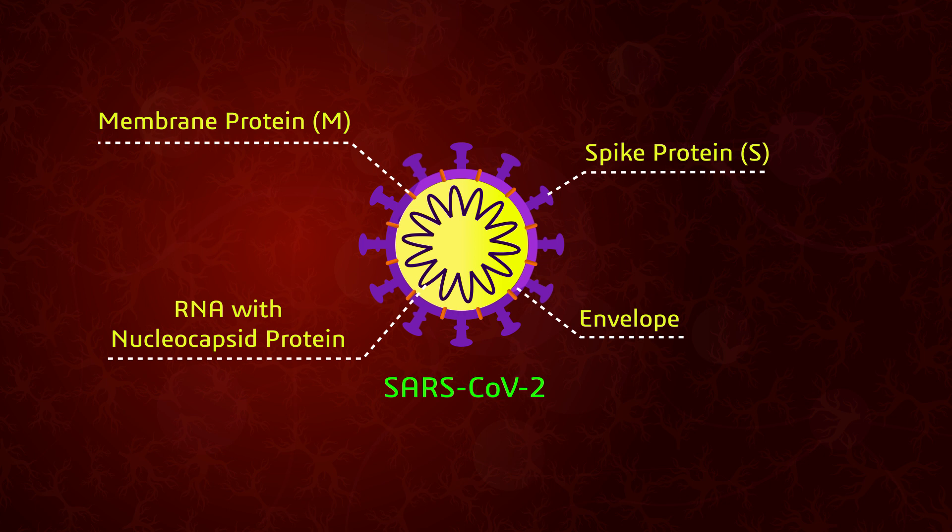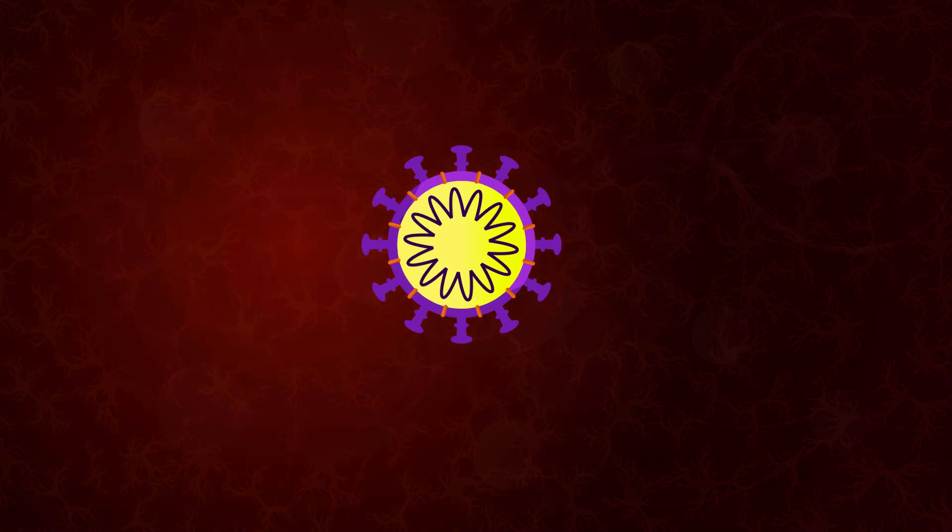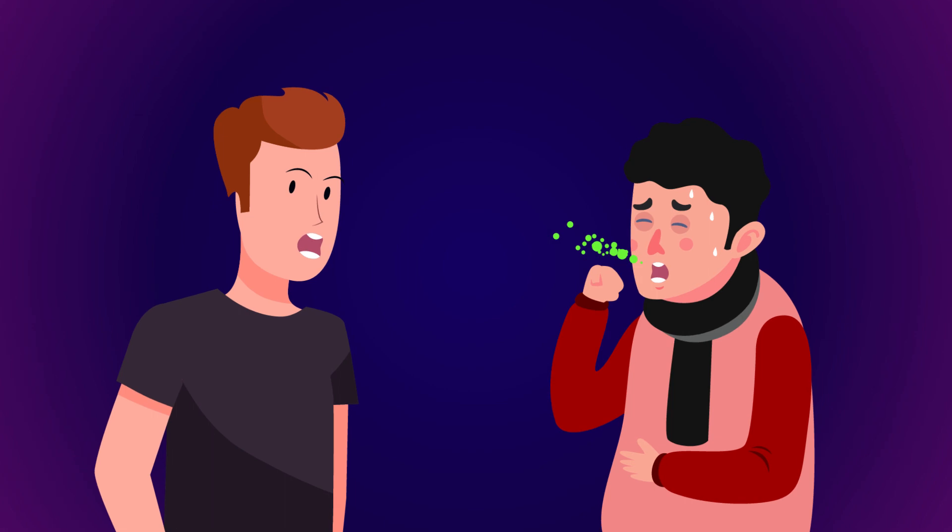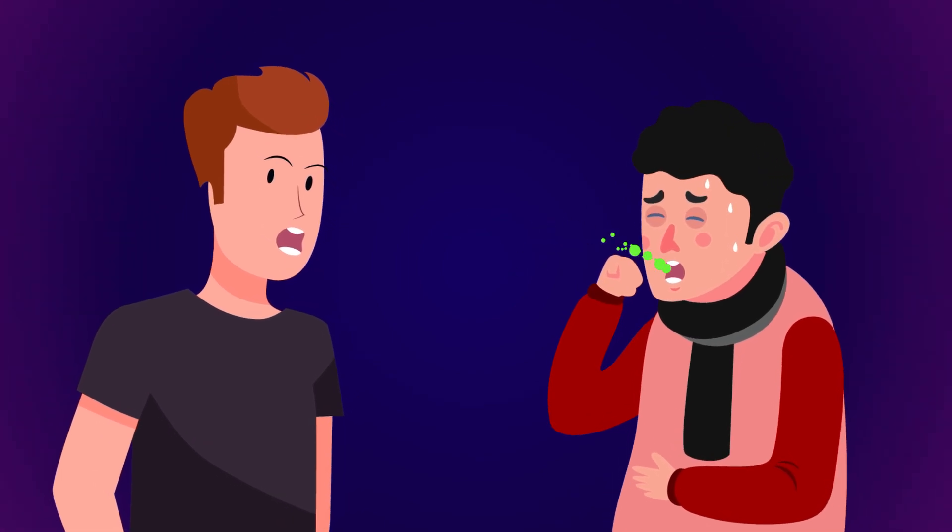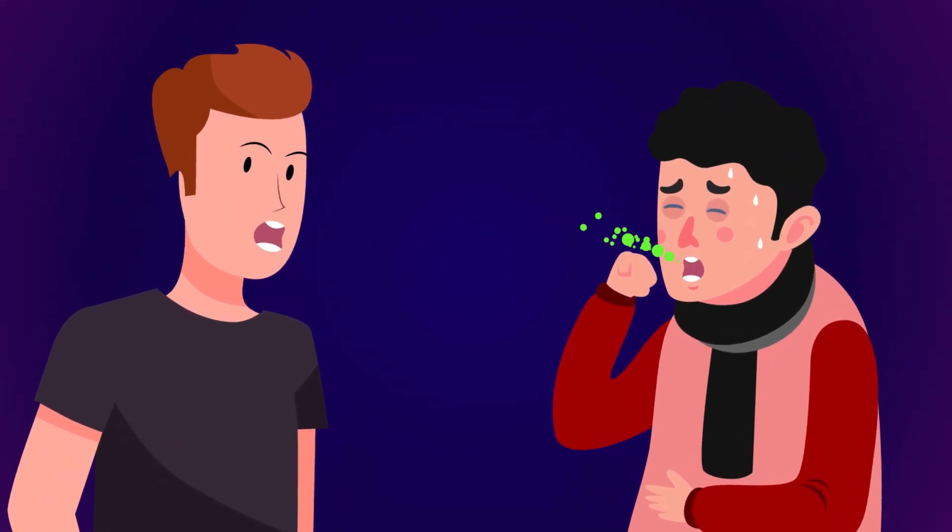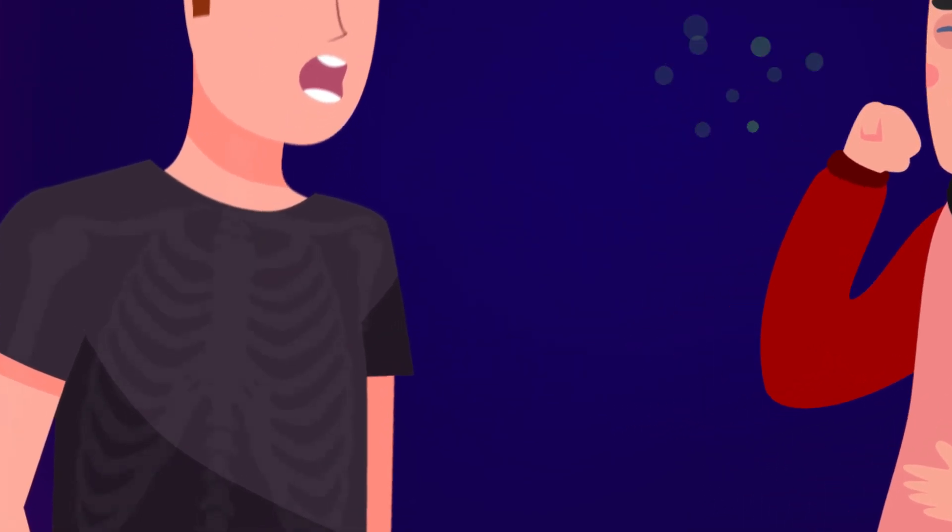Coronavirus spreads from person to person through small air droplets. Let's say a person with COVID-19 sneezes or exhales in front of you and you inhale the viral particles coming out of his mouth. The virus will then travel to the respiratory system.